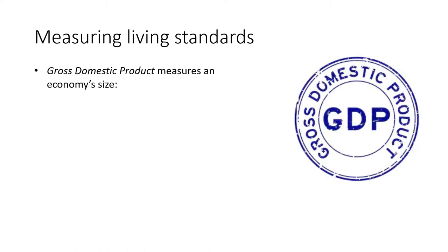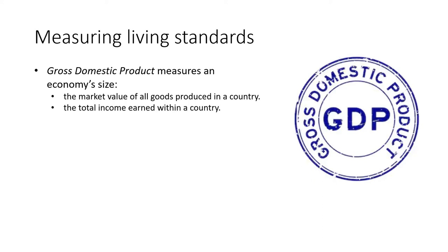When we measure living standards, we commonly rely on gross domestic product, or GDP, to measure an economy's size. GDP is at once the market value of all the goods produced within the country, which is exactly equal by construction to the total income earned within a country. The value of all those goods produced and sold ultimately ends up being income for someone in that country.